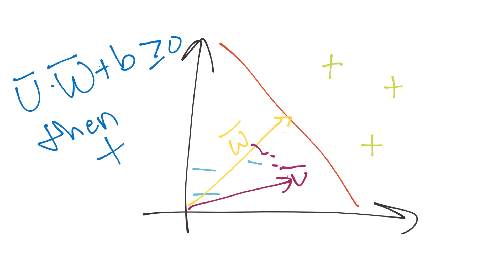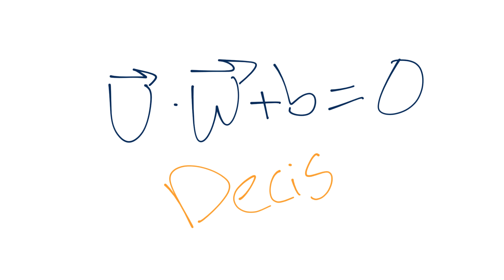So actually, it's going to be vector u dot w plus b is less than or equal to zero, and that would be a negative sample. That's the operation that the machine learning classifier is going to run. What if vector u dotted with vector w plus b equals zero? Then, that would mean that that was on the decision boundary.